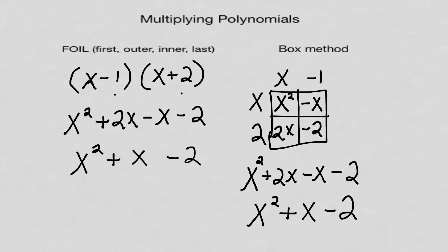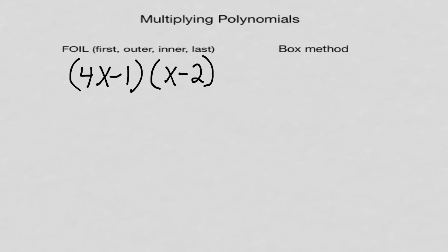Now I'm going to do a problem from the worksheet — number 5. I'll do First, Outer, Inner, Last, which is what they call foiling. Multiplying the First: 4x times x is 4x squared. Now the Outer: that's negative 2 times 4x, which is negative 8x.